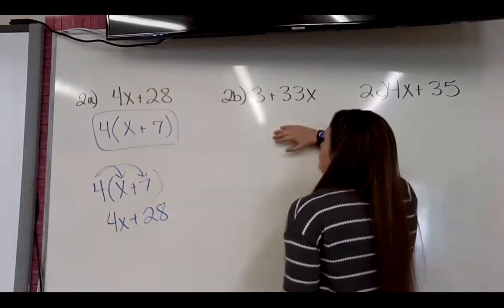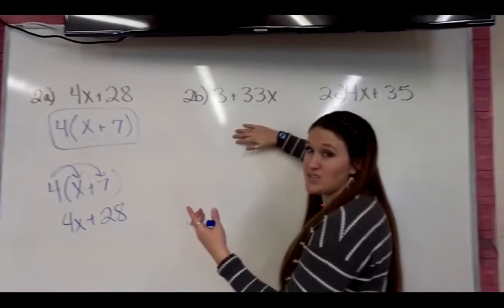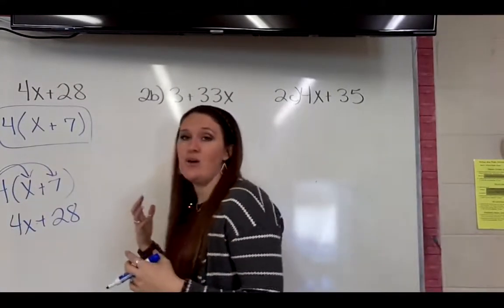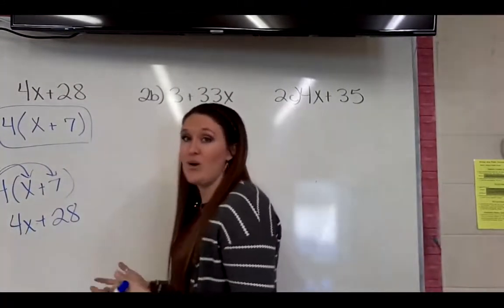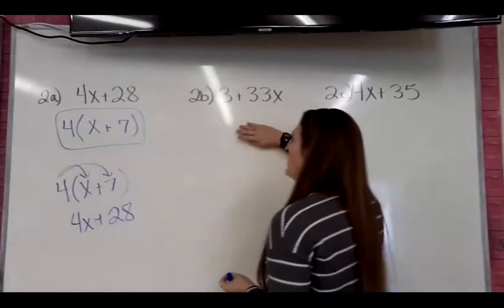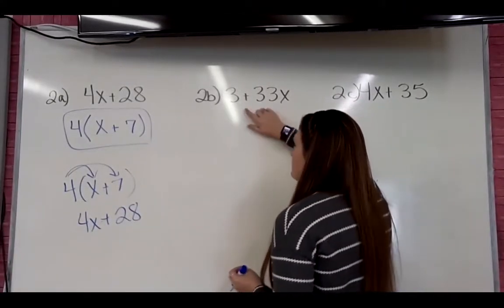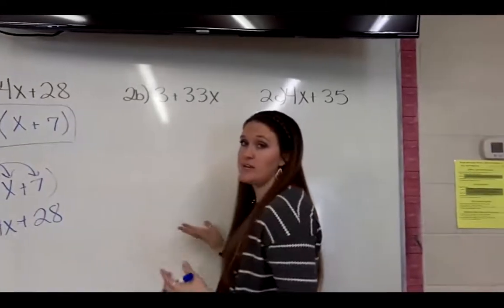So on to b, and there is a reason we do this, guys. This will help us when we start getting into solving algebraic equations and expressions. So 3 plus 33x, okay, we can hopefully easily see on this that the common number, the factor, number we're going to factor out is 3.